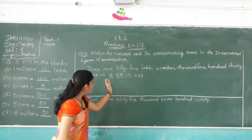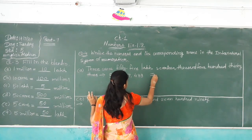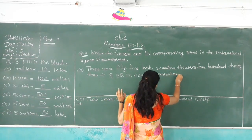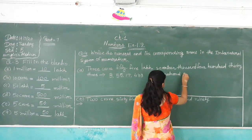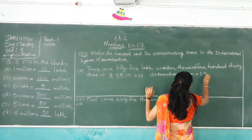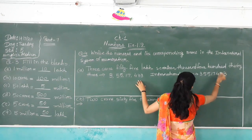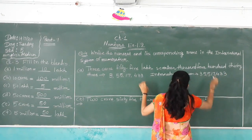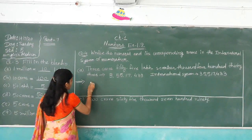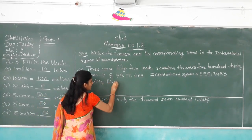Now write this numeral in the international system. In the international system, every period has a group of 3. So: 3, 5, 5, 1, 7, 4, 3, 3. Put a comma from the extreme right, first and second group. Now write the number name: 35 million.